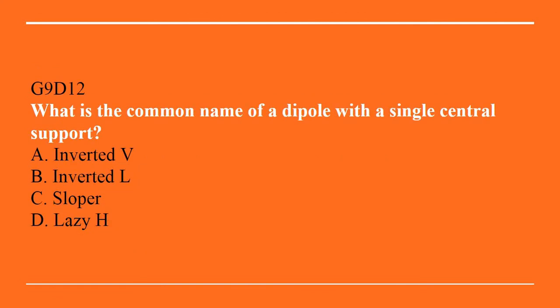G9D12: What is the common name of a dipole with a single central support? A. Inverted V. B. Inverted L. C. Sloper. Or D. Lazy H. The answer is A, inverted V.